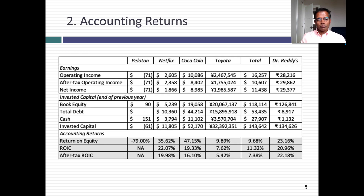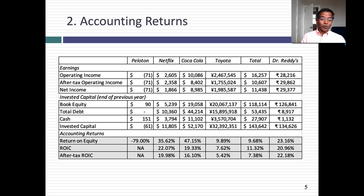Let's move on to accounting returns. For all six of my companies, I computed return on equity, where I divide net income by book equity — staying with the accounting measure of book equity with all of its limitations. I also took after-tax operating income and divided by invested capital. Remember, invested capital is book equity plus debt minus cash. In 2019, the accounting change means debt does include lease commitments converted into debt. If you look at the returns on equity, you can see wide divergence. Peloton has a negative return on equity of minus 79% — because it's losing money and has very little shareholders' equity.